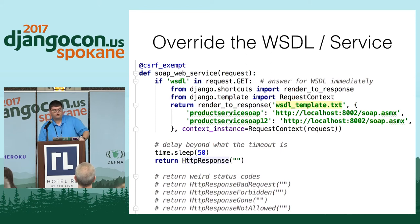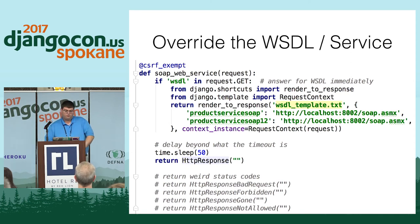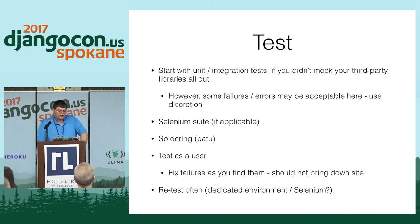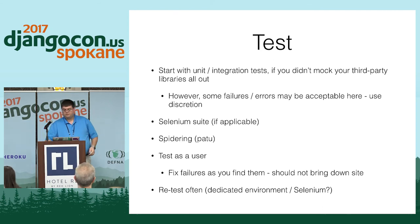You can also return weird status codes — I usually leave a bunch commented out and uncomment whichever failure mode I want to test. Then use your unit tests, Selenium suites if you've got them, or a spider that follows all the links on your site. Lastly, test as a user — do what they would be doing and see what they're seeing. And retest often.